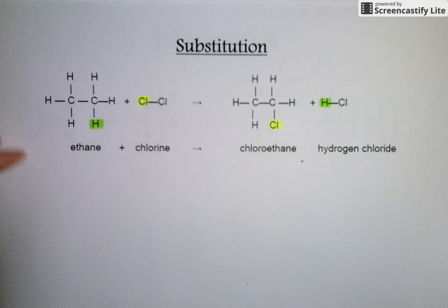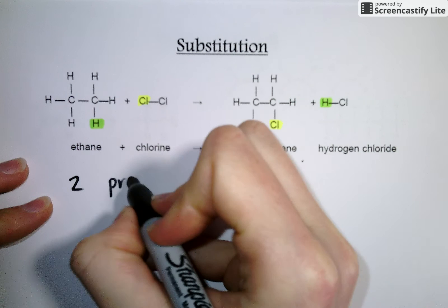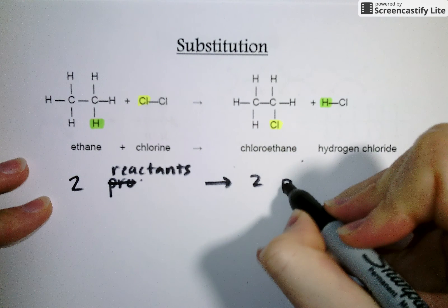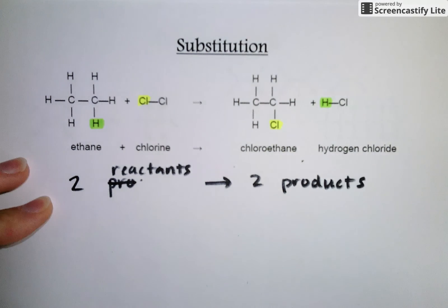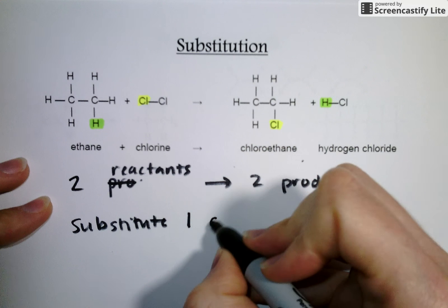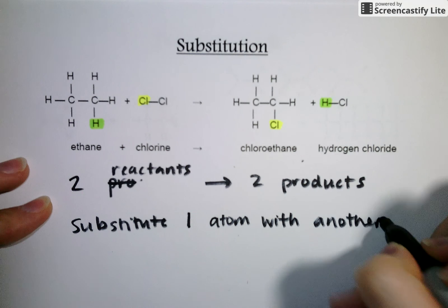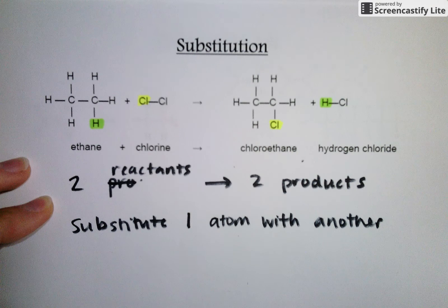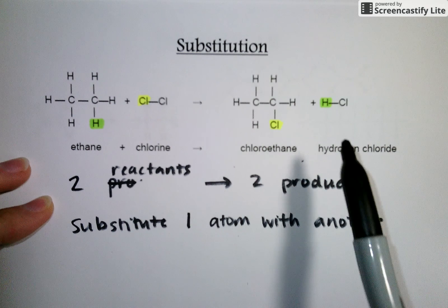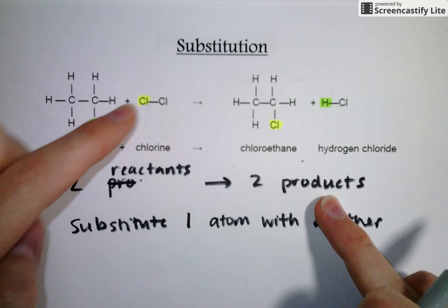So the key idea of a substitution reaction is that we start with two reactants and we end with two products, and we substitute one atom with another. In this case, we're substituting hydrogen with chlorine. However, we still end up with two organic molecules and something else. So it's going to be very important to remember this two reactants to two products idea, because only one atom is being swapped out for another.